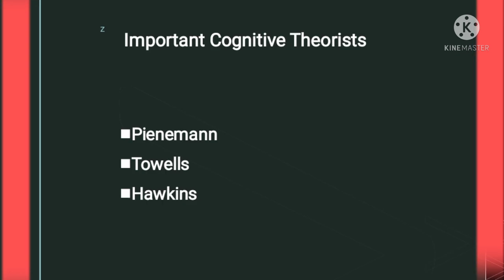Important cognitive theorists include Pienemann, Towell, and Hawkins, who belong to processing approaches. These approaches investigate how second language learners process linguistic information and how their ability to process the second language develops over time. They are focused primarily on the computational dimension of language learning.